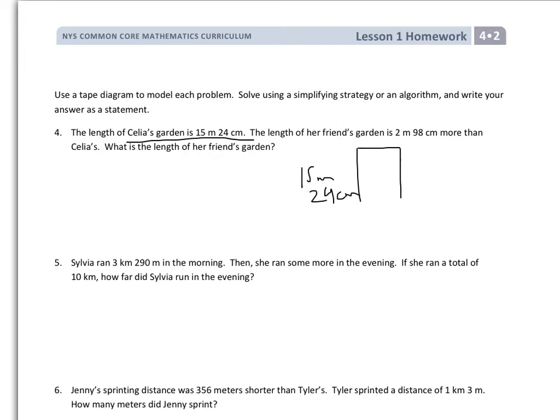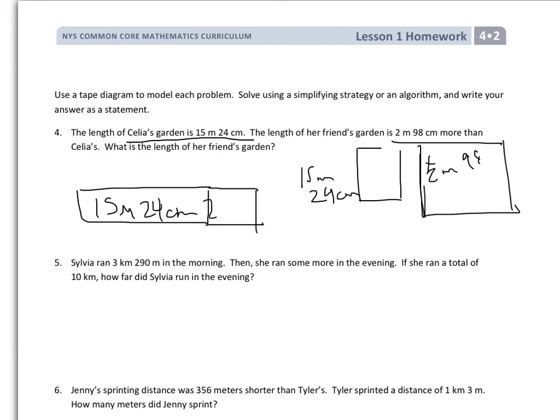The length of her friend's garden is 2 meters, 98 centimeters. It's 2 meters and 98 centimeters more than Celia's. So that means hers is actually a little bit bigger than Celia's because it's plus 2 meters, 98 centimeters. So the tape diagram should look like this. We should show Celia's, which was 15 meters, 24 centimeters, and her friend's, which is a little bit longer. We could show as 2 meters, 98 centimeters. To find the total, we can see that that's going to be this distance. Students would need to add both parts together.